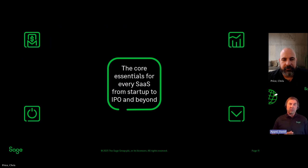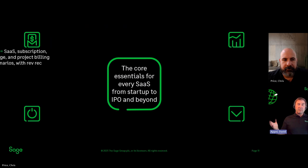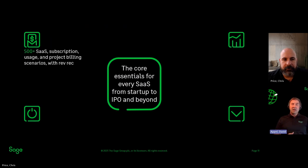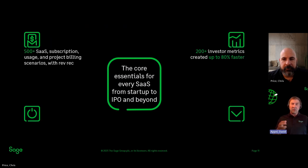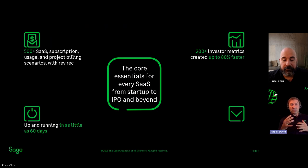We're singularly unique in our ability to help you accomplish all this. As Chris said — over 30 of the core metrics, 40 KPIs, and 50 of the major graphs and reports. This is all against the backdrop of supporting over 500 different billing models, amazing financial reports and FP&A planning, over 200 different investor metrics produced up to 80% faster because it's all in one place done in real time. When you want to get started, we can be up and running in as little as 60 days, getting your historical data, your GL, and your chart of accounts and dimensions in place.